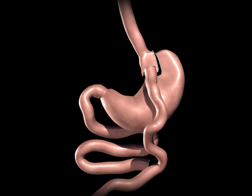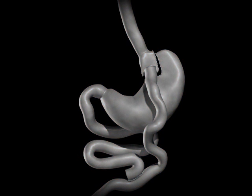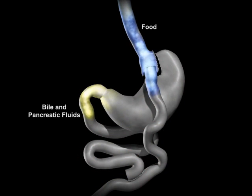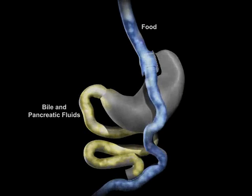Bypassing a portion of the small intestine decreases the absorption of calories and nutrients. The upper portion of the small intestine is reconnected to the lower portion of the intestine. The bile and pancreatic fluids from the liver and pancreas allow food to be completely digested.